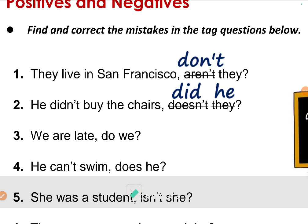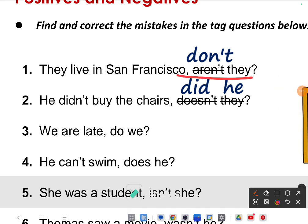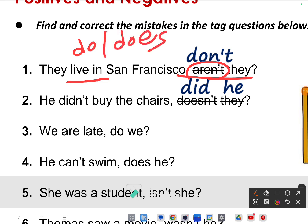They live in France — the answer given is 'aren't they,' which is not right. Because it's present tense with no helping verb, you have to use 'do' or 'does.' It's a positive sentence, so the negative tag is 'don't they.' Second one: he didn't buy the choice — that's negative, so the tag is 'did he.'